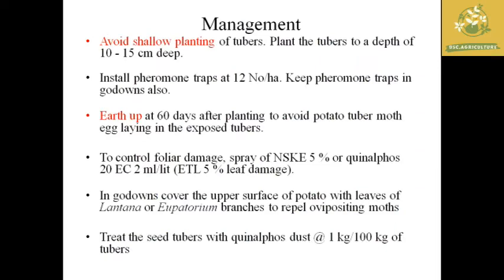For management of potato tuber moth: avoid shallow planting — tubers must be planted at a depth of 10 to 15 centimeters, as shallower depth increases attack. Install pheromone traps at 12 per hectare to monitor the presence of tuber moth; pheromone traps must be placed in godowns. Earthing up to 60 days after planting helps avoid egg laying on exposed tubers.